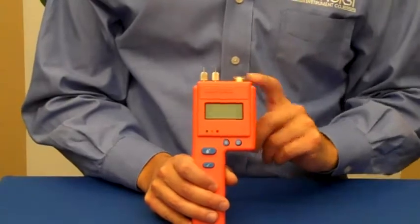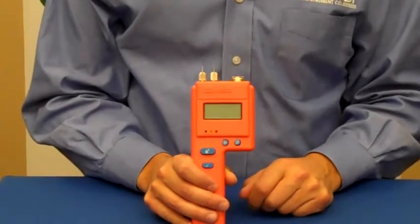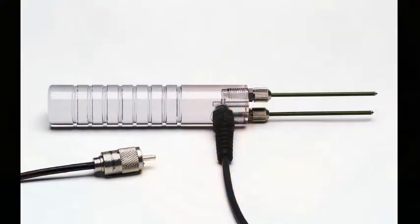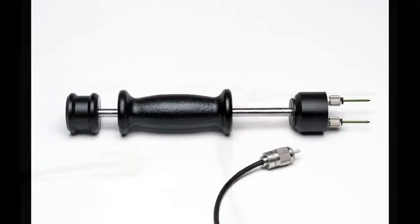The connector on the side accepts any Delmhorst electrode. The most popular electrodes are the 21E for measuring insulation behind the drywall, and the 26ES for measuring hardwood floors and subfloors.